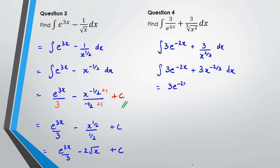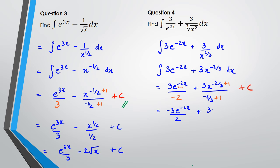Now I can integrate. For exponential functions everything stays the same but we divide by the differentiation of the power, which is negative 2. For the x term, we have 3x to the power of negative 2 thirds, add 1 to the power, and divide by the new power, which is negative 2 thirds plus 1, plus c. Simplifying: negative 3 e to the power of negative 2x over 2, plus 3x to the power of 1 third, divided by 1 third, plus c. That gives negative 3 over 2 e to the power of negative 2x, plus 9x to the power of a third, plus c — because 3 divided by 1 third is 9.